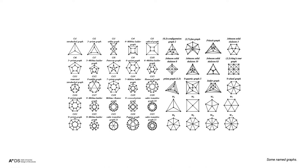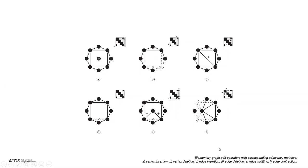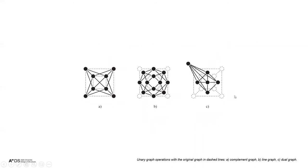We can define graph operations — graph grammars. There are elementary graph edit operators: vertex insertion, vertex deletion, adding an edge, deleting an edge, and composite operations like edge splitting — adding a node and an edge — or edge contraction — removing one edge and one node at the same time. These operations correspond to changes in the adjacency matrix.